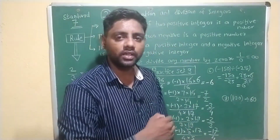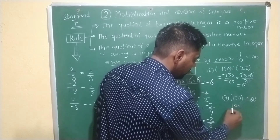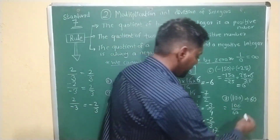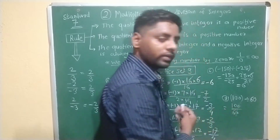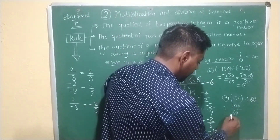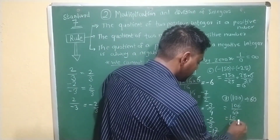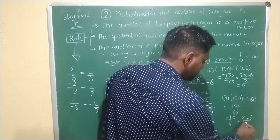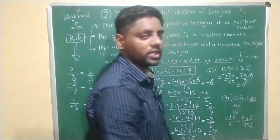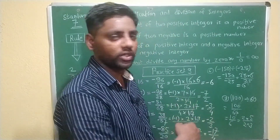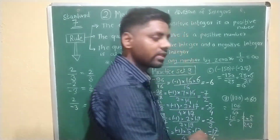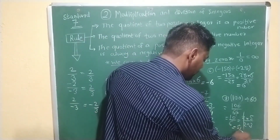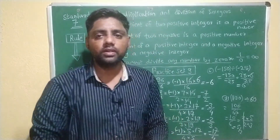Last example: 100 divided by 60. The zeros cancel, giving 10 divided by 6. Now 10 equals 2 into 5 and 6 equals 2 into 3. The 2 at numerator and denominator cancel, and the remaining number is 5 divided by 3. So the answer is 5 over 3.